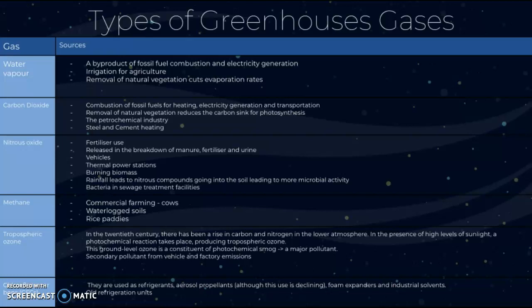Then we have nitrous oxide, which comes from fertilizer use — released in the breakdown of manure, fertilizer, and urine. It also comes from vehicles, so in urban areas a lot of vehicles cause more nitrous oxide production, as well as thermal power stations, burning biomass, and rainfall leading to nitrous compounds entering the soil and increasing microbial bacterial activity, and from sewage treatment facilities.